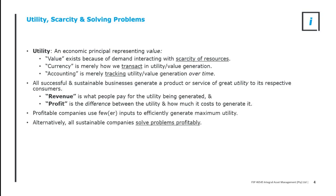Profit is the difference between utility and how much it costs to generate it. Profitable companies use fewer inputs to efficiently generate maximum utility. Utility exists because of scarcity that creates a problem. All businesses solve problems, and by solving relevant problems they generate utility. If you can find the problem and solve it repeatedly, you've got a business. All existing successful and sustainable businesses solve problems because someone wants or needs something.